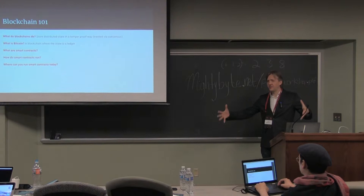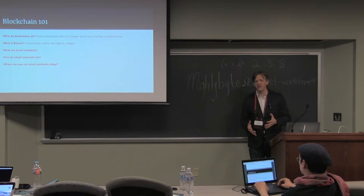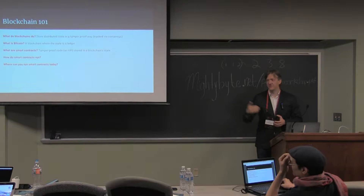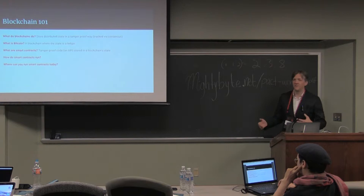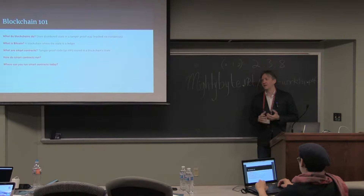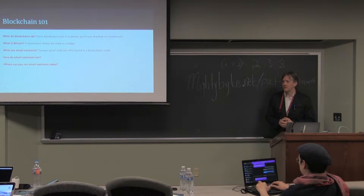So we have some distributed state — that's a blockchain. Bitcoin took that idea and put a ledger on top of it. Smart contracts are, instead of putting a ledger as your state, putting code in the state — which was Stephen's stored procedures term. Once you put this code in the state, people can interact with that code, and they know that everybody has the same understanding of what code is being run.